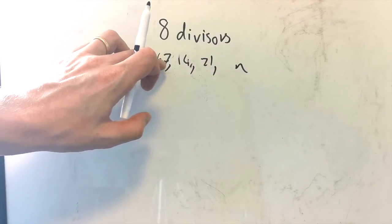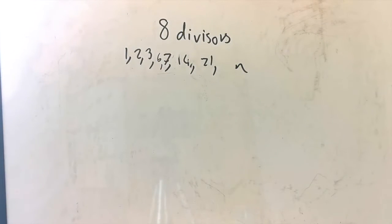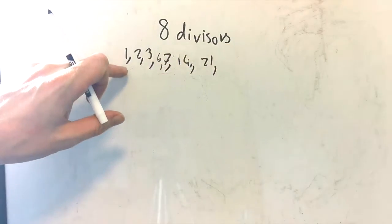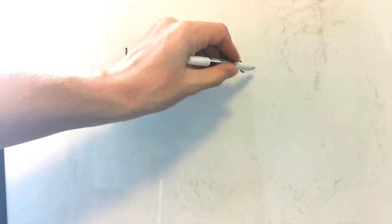We've got 1, 2, 3, 4, 5, 6, 7, 8. So we've got 8 factors. Therefore, we've found all of them. And we can also determine that this last number, of course, must be 42.